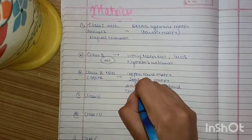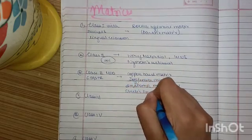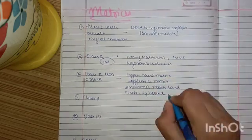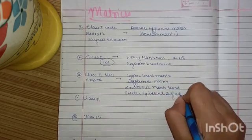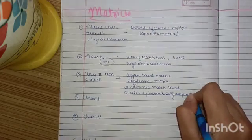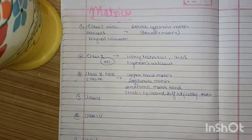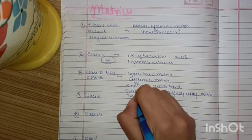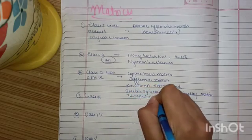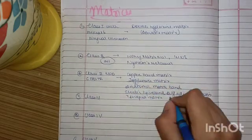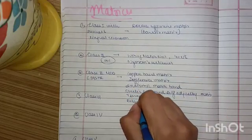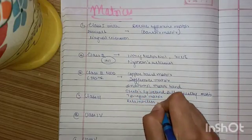S stands for steel-laced, skiv-land, self-adjusting matrix. Then T stands for T-shaped matrix. R stands for retainer-less automatrix.